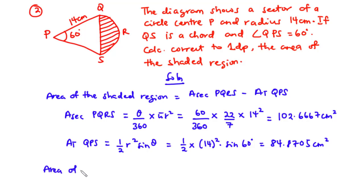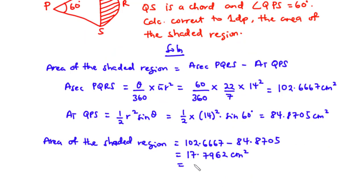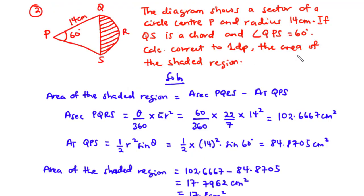The area of the shaded region is 102.6667 minus 84.8705, giving us 17.7962 centimeters squared. Because we are asked to leave our answer to one decimal place, that equals 17.8 centimeters squared. This is the area of the shaded region. That's it for today's video — thanks for watching and see you in the next video.